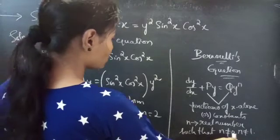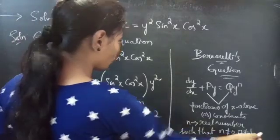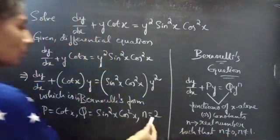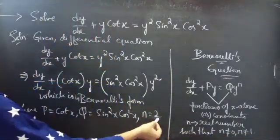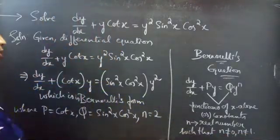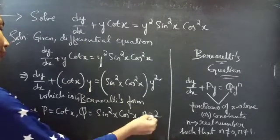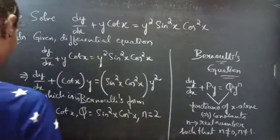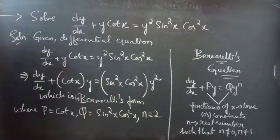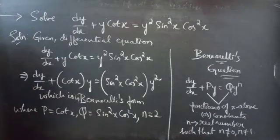The condition is n must not equal 0 or 1, and we have n equals 2, which is a real number satisfying the condition. Now we will reduce this Bernoulli's equation to linear form.